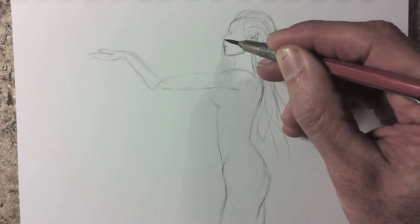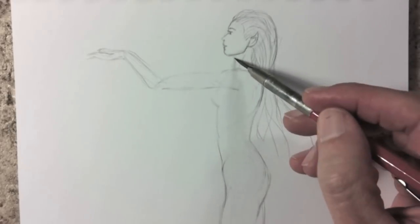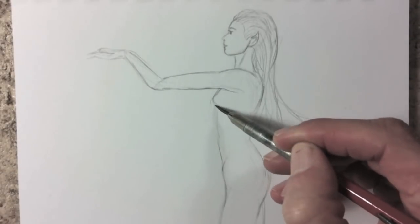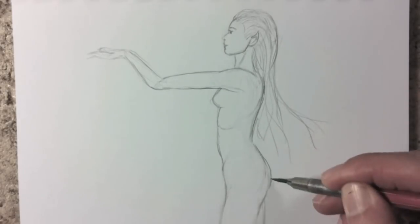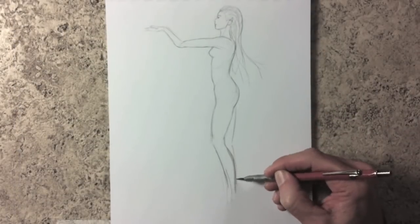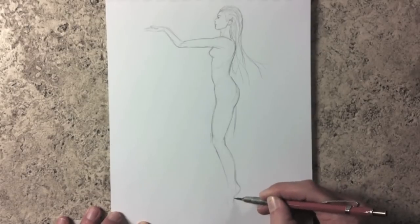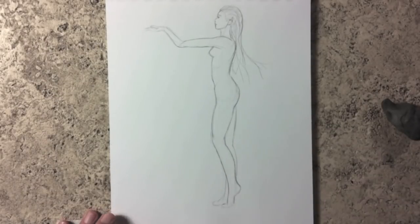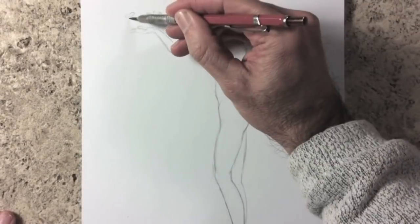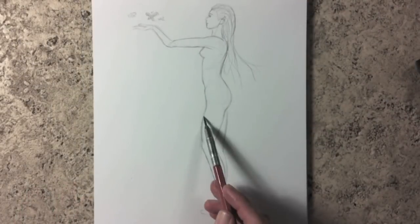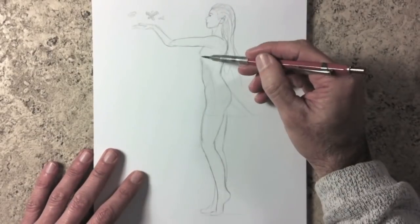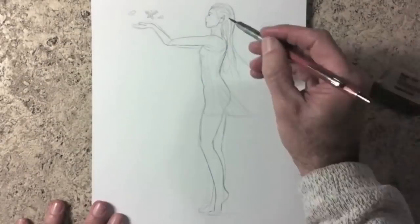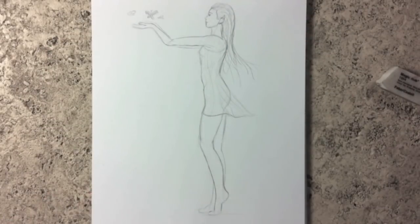We can do some features, and don't forget the sternocleidomastoid muscle, from the ear to the collar bone. The feet, as the other parts, don't need to have much detail, but they should be looking correct. Let's give her some butterflies to play with. And a little dress. Okay, next!